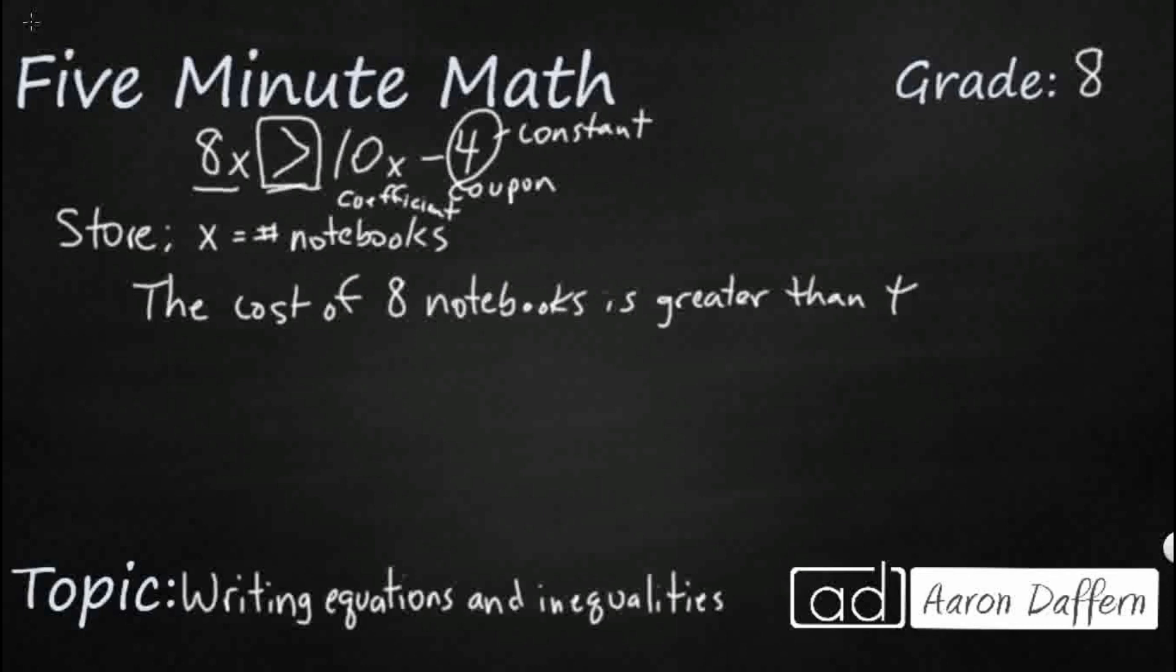Greater than the cost of 10 notebooks, which doesn't make sense on its own, but that's why we have that constant with a $4 coupon. So there we go. We've got a basic situation or scenario that would match this 8x is greater than 10x minus 4.